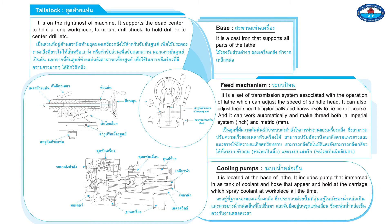Page 152: Tailstock. It is located at the rightmost part of the machine. It supports the dead center to hold a long workpiece, or is used to mount a drill chuck to hold a drill or center drill. Bed. It is a cast iron structure that supports all parts of the lathe.